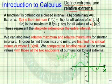These represent the absolute extrema. We also have relative maximum and relative minimums for shorter intervals. In order to find these maximum and minimums, we first find the critical values or where the first derivative is equal to zero. We compare the function values at the critical values with those at the two endpoints.